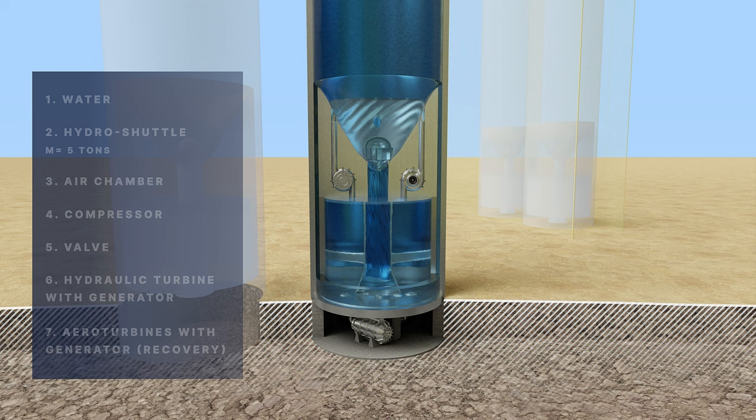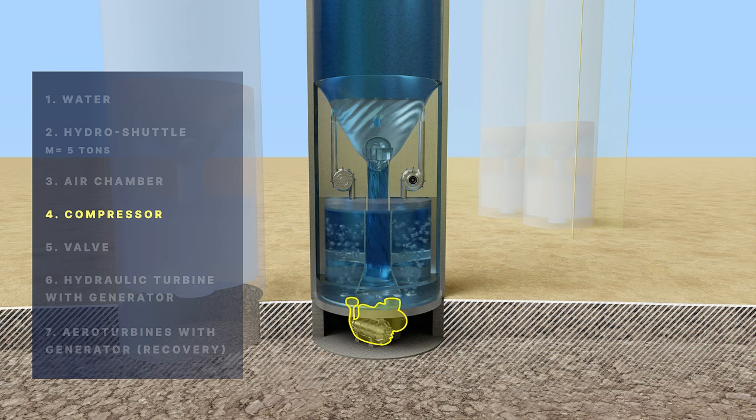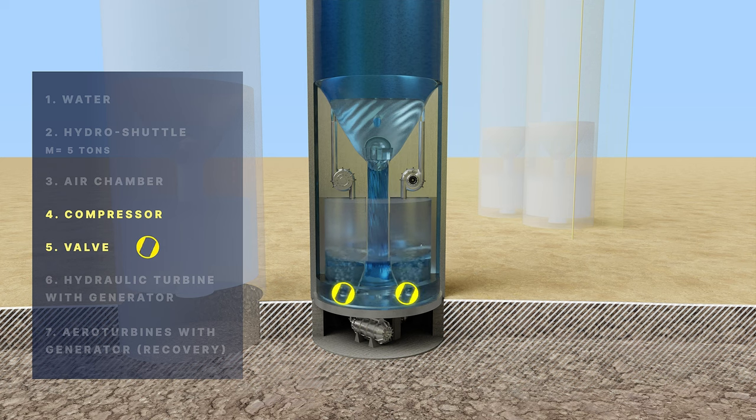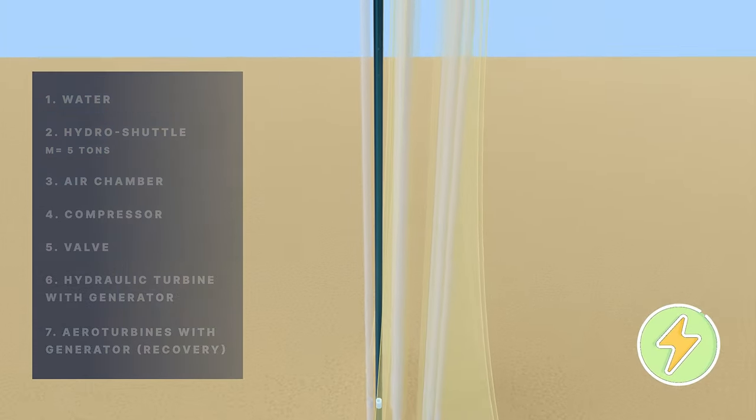Principle of operation. When the platform is located in the lower part of the housing, air is pumped with a compressor. With the accumulation of a sufficient amount of air, the platform acquires positive buoyancy and, under the action of the Archimedes force, begins to move upward.